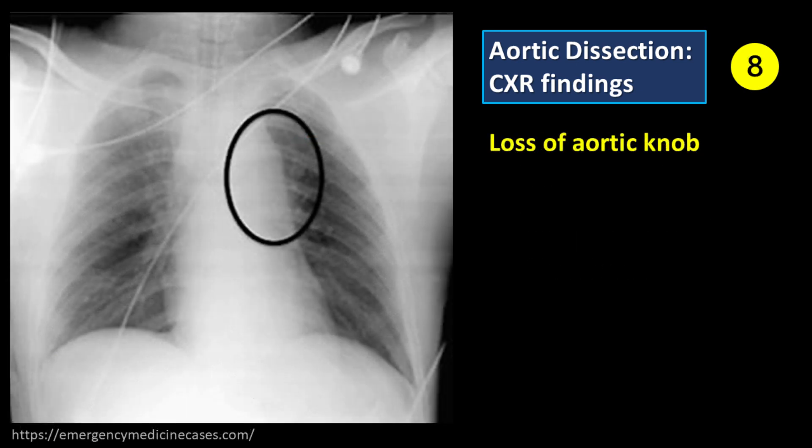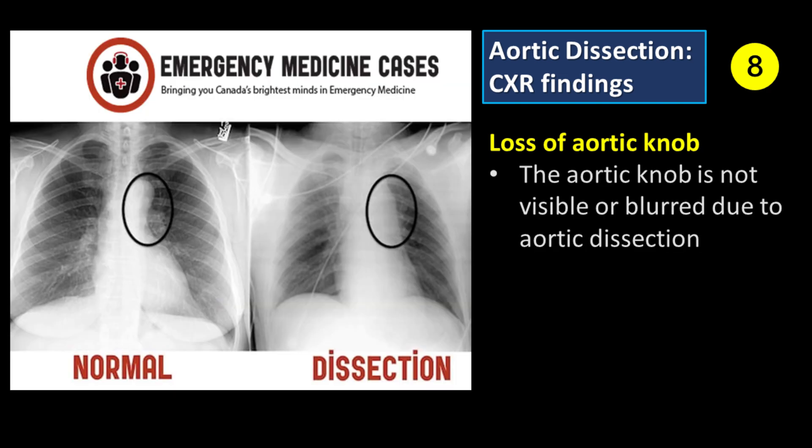Feature number 8: Loss of aortic knob. The normal contour of the aortic knob may be obliterated due to aortic dissection.